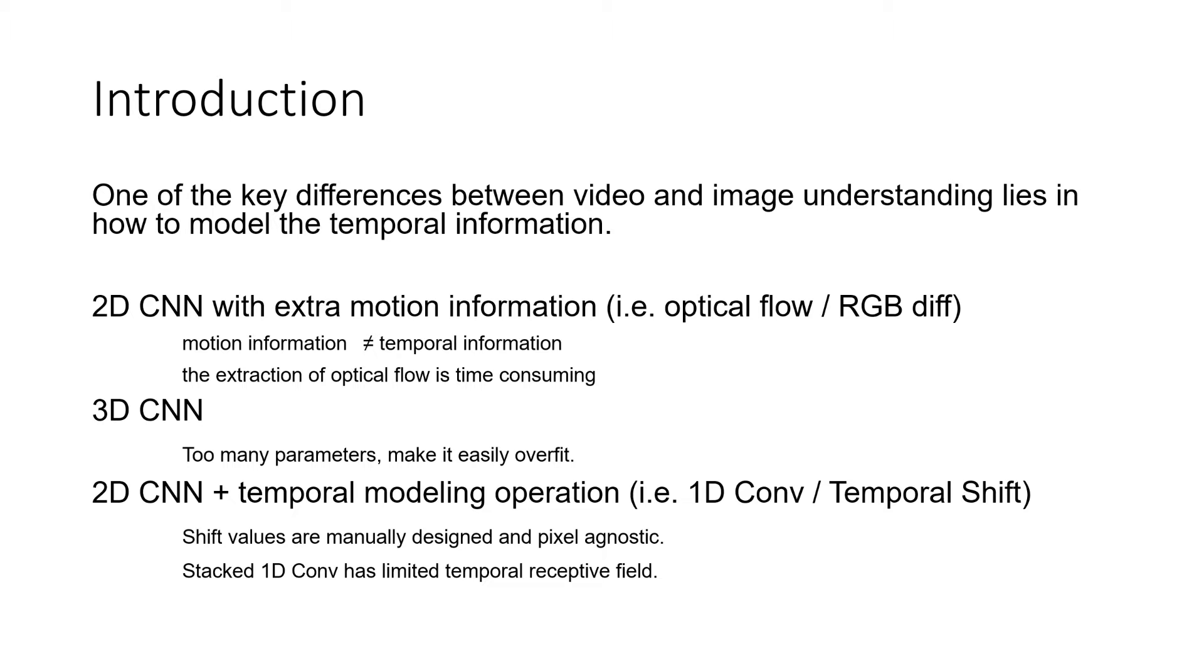More recent works resort to 3D convolution and 3D CNNs can directly model spatial and temporal information simultaneously. The spatial-temporal receptive field is progressively enlarged while stacking the 3D local convolution kernels. However, 3D CNNs usually contain too many parameters. This makes it very difficult to train and will be easily overfit.